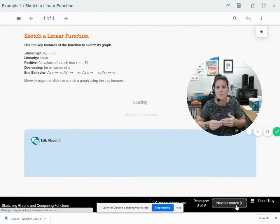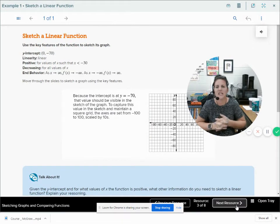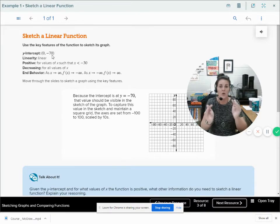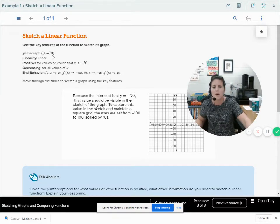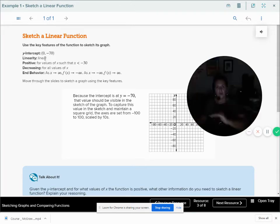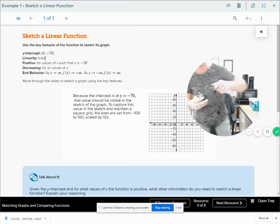So looking at example one in your workbook on page 31, it says use key features of the function to sketch its graph. So we've got a y-intercept of 0, negative 70. Well what does the y-intercept mean? The y-intercept, if it didn't give us the coordinates, if it just said we had a y-intercept of negative 70, well we know that's where my line is going to cross my y-axis. So we come over here at negative 70 and we could put a point. It tells me that it is a linear function. So what does linear mean? Well it means that it's a straight line.